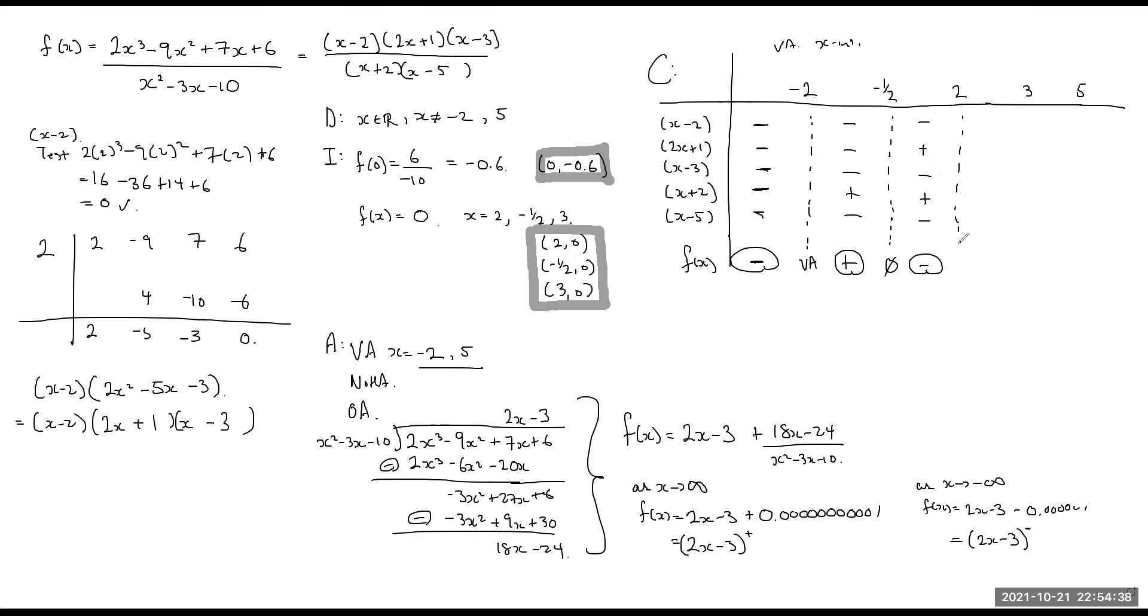2 is also a 0. Between 2 and 3, I'm going to do 2.5. That's a positive, positive, negative, positive, negative. It's going to be a positive. And then at the 3 is another 0.